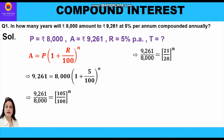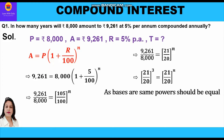We can write 9261 upon 8000 = (21/20)^n. Now we have to make the base the same. We can write 9261 as 21 cubed and 8000 as 20 cubed. So we write (21/20)^3 = (21/20)^n. As the bases are the same, the powers should be equal, so n = 3.